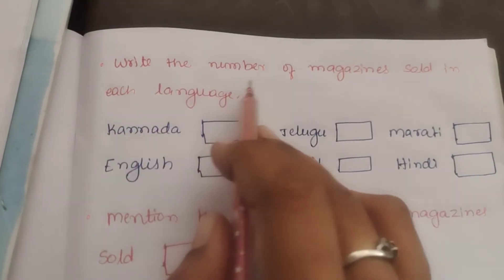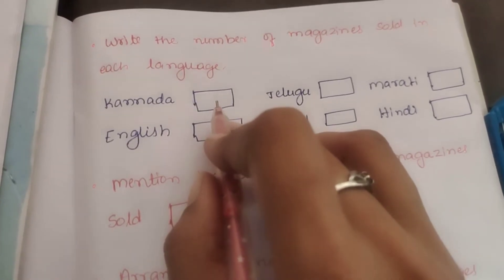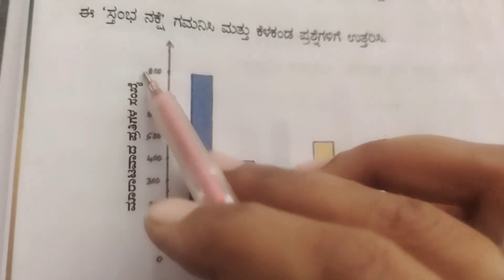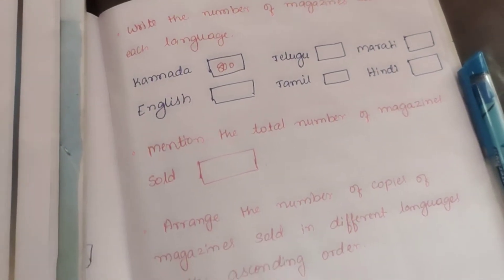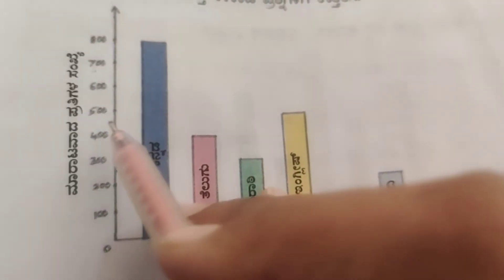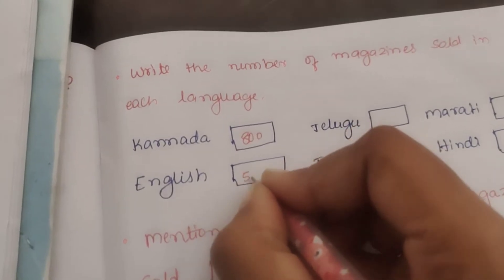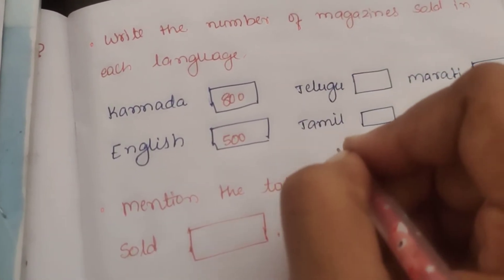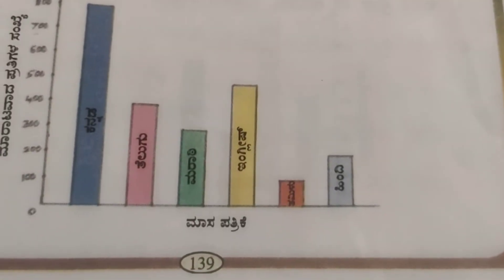Write the number of magazines sold in each language. The number for the first language is 800. English is 500. Telugu is 400. Tamil is 100.